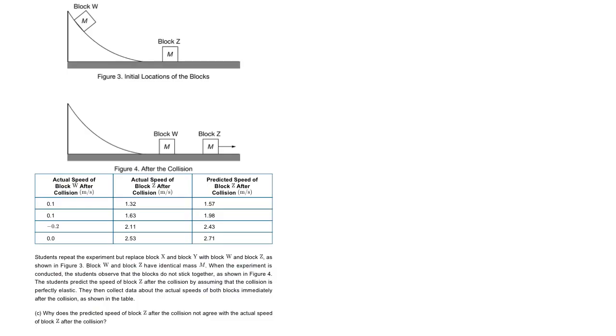So part C, we're going to repeat the problem, the experiment, but this time the students are going to, it's going to bounce off it. We're going to assume it's a perfectly elastic collision. They take data, they make their prediction, and they find their actual. And they're just asking to do a little bit of error analysis here.